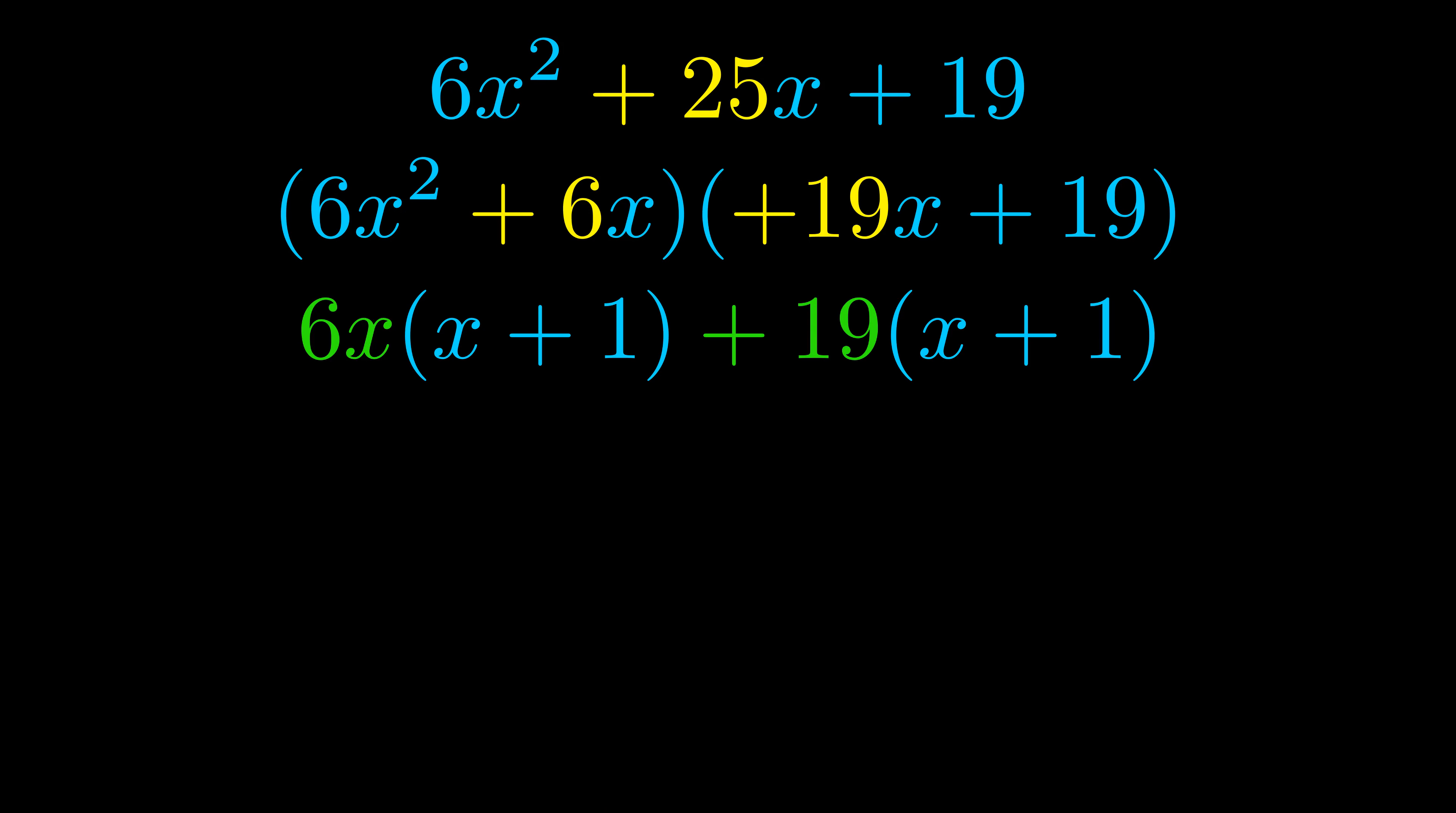Notice also how what remains inside of the parentheses is the same in both cases. The blue values are the same. Those blue values will become one of our factors and we will combine the two green values the GCFs that we pulled out to get the other one.